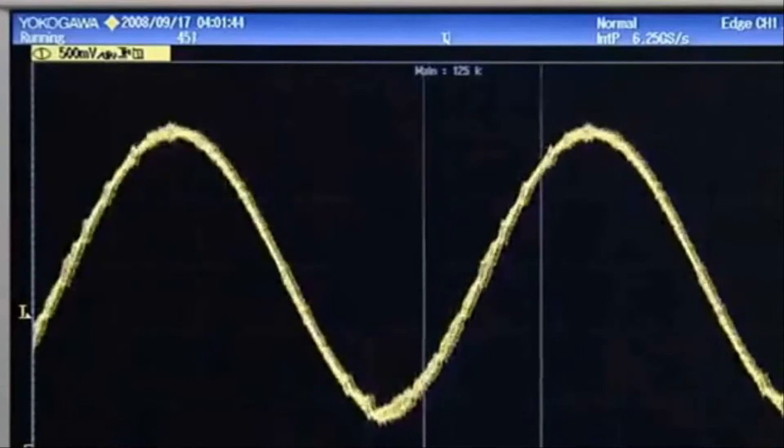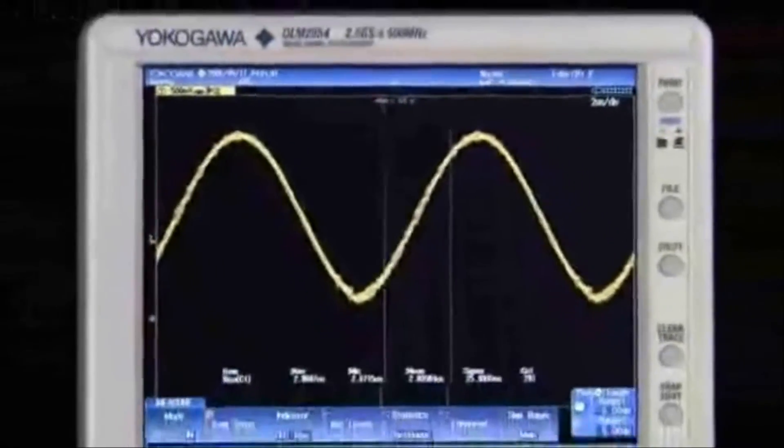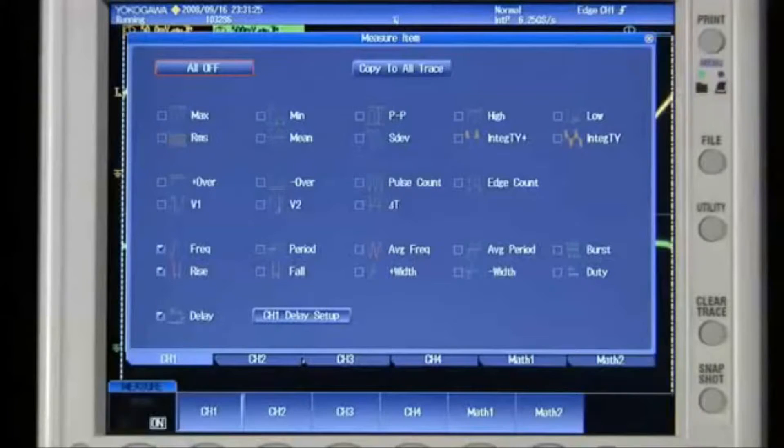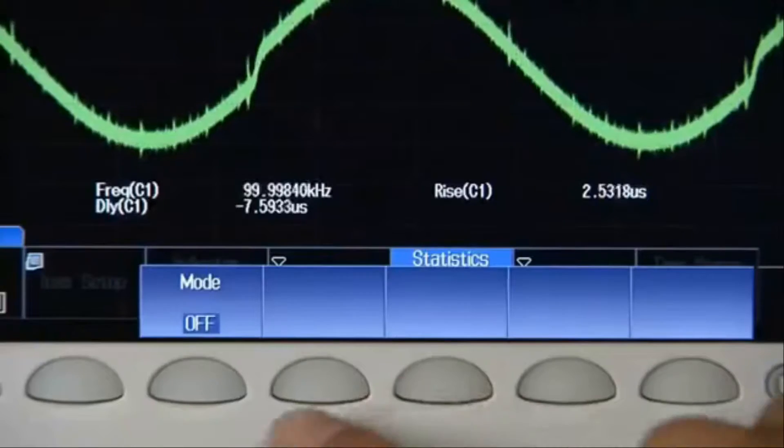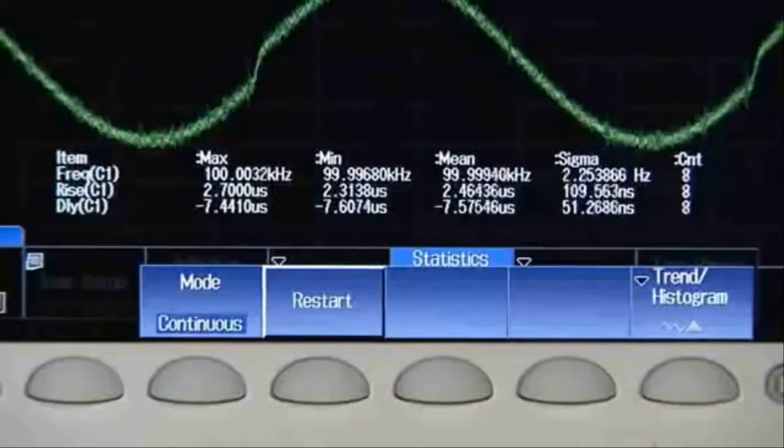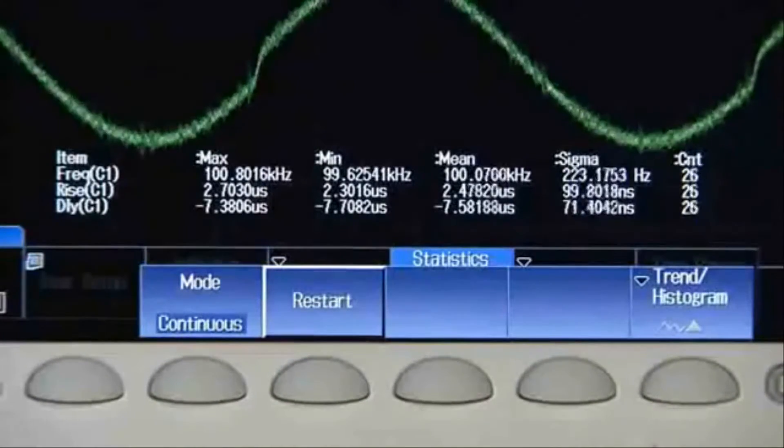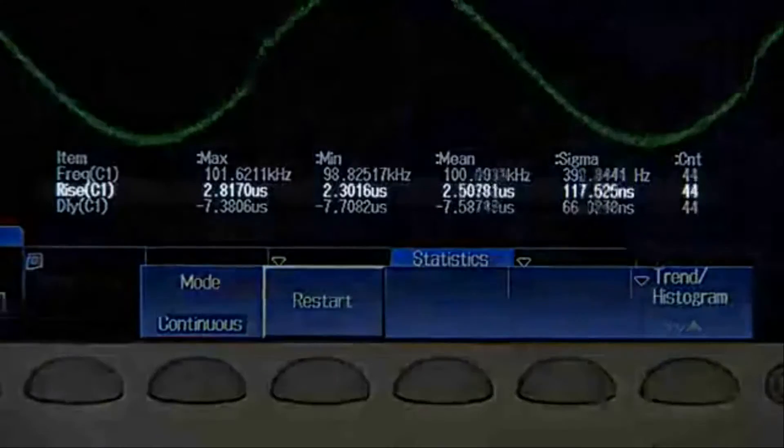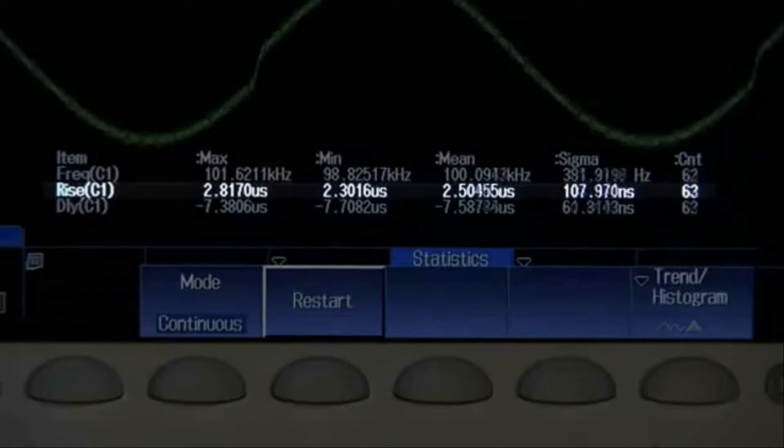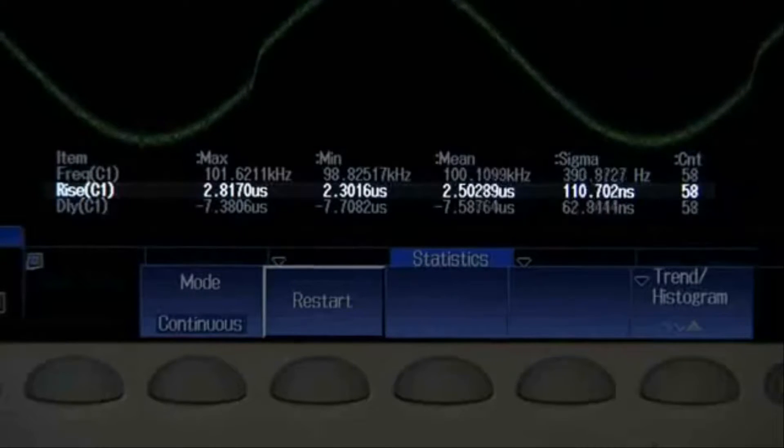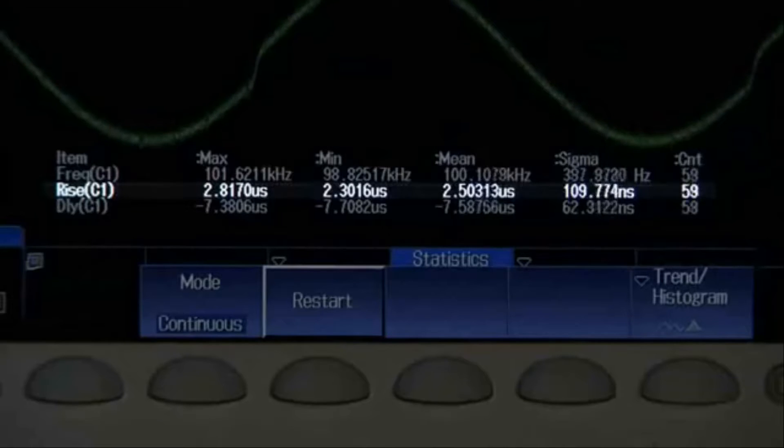Or let the Yokogawa DLM2000 make fully automated parameter measurements for you. Simply select from the parameter list and display up to 20 in real time. You can continuously calculate statistics for any parameters. For example, here we are calculating rise time statistics over multiple acquisitions, including max, min, mean, and standard deviation.